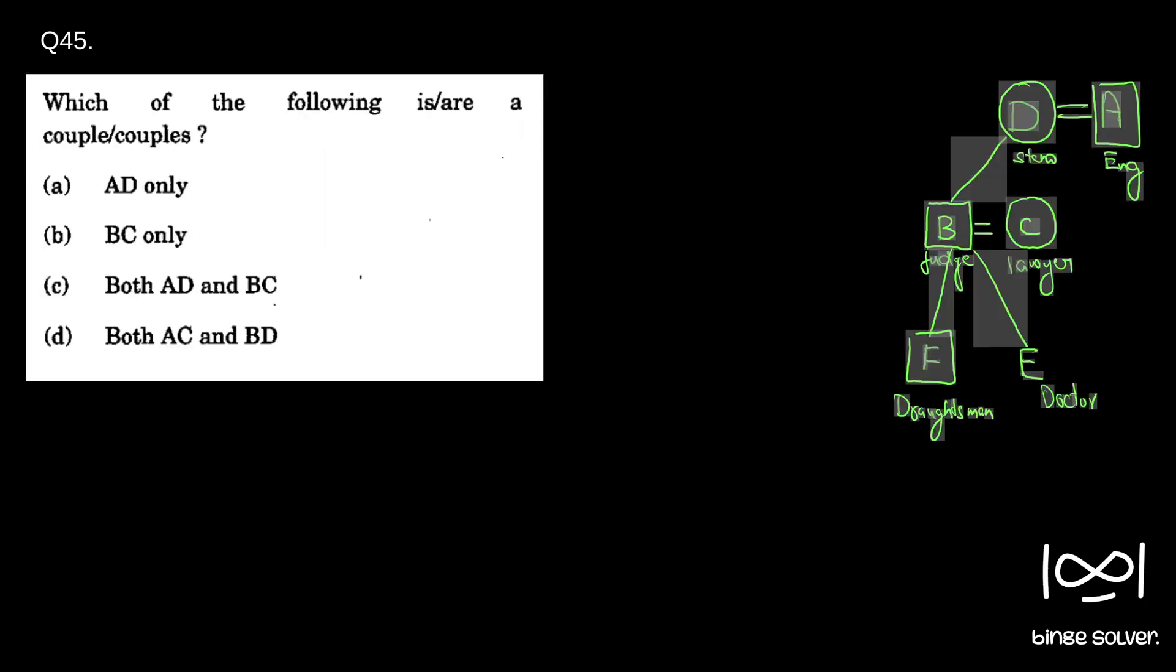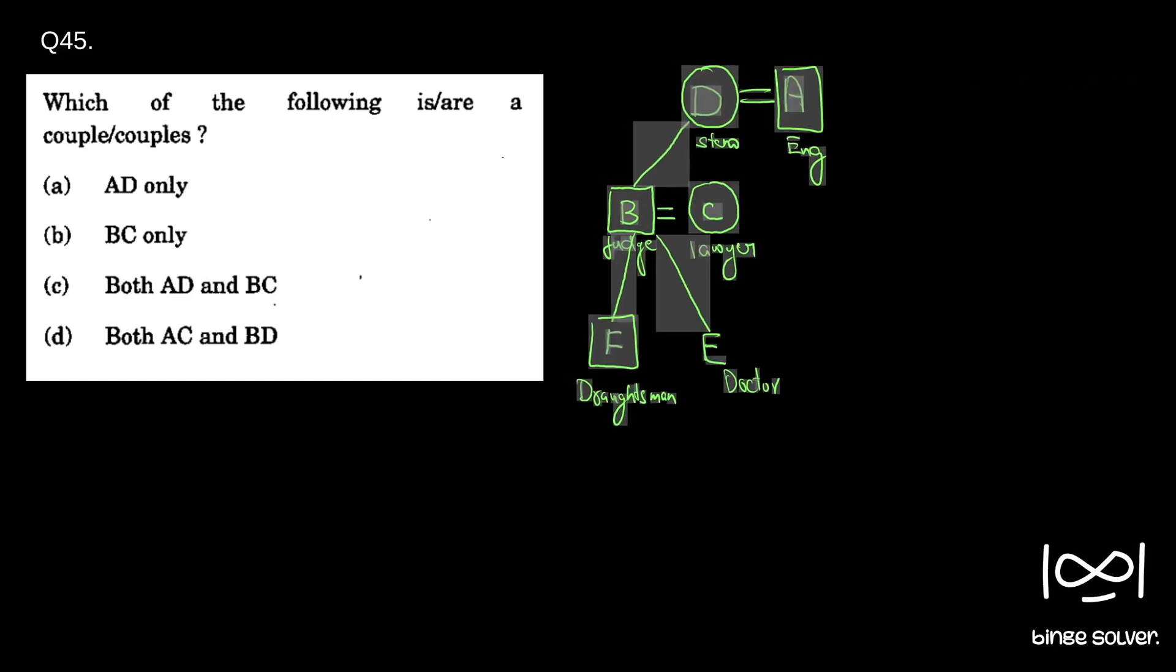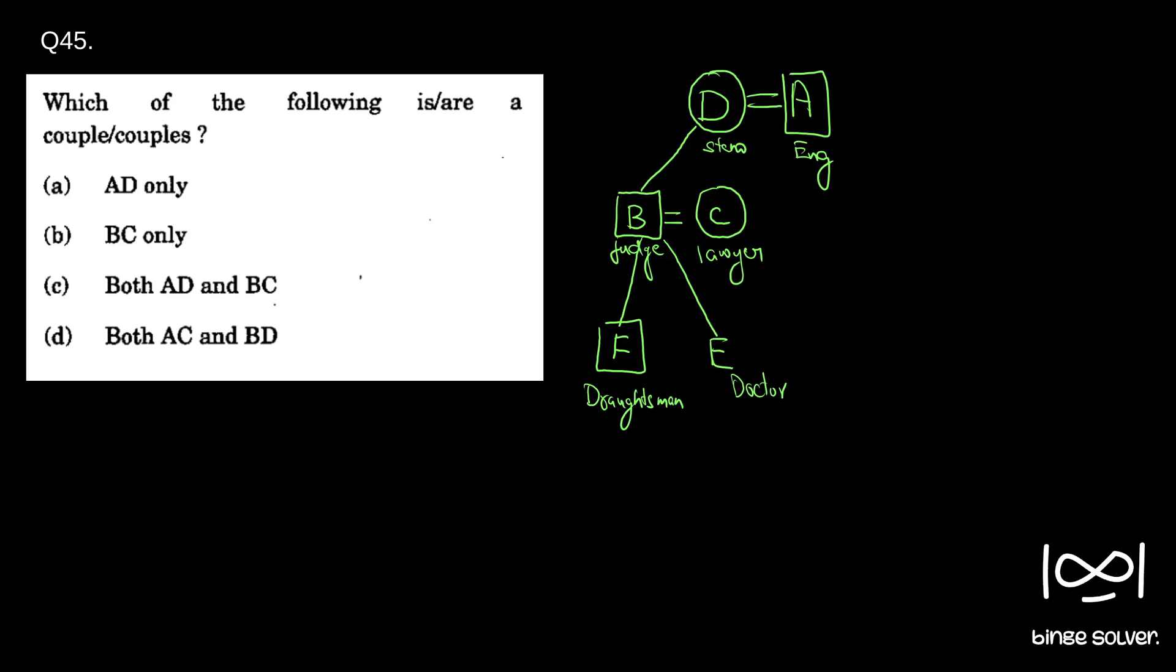Moving on to the next question. Which of the following are a couple or couples? From the figure we know that the couples are D and A, and B and C. Both A, D and B, C are couples. C is the correct answer. A, D and B, C.